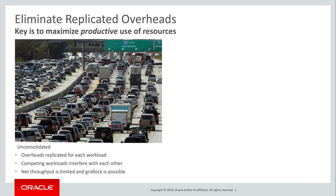Second, the multi-tenant consolidation model eliminates replication of overheads. Again, the transportation analogy works well here. Replication of overheads is inefficient for two reasons. First, by definition, it represents redundant use of resources. And second, these overheads compete with each other — net throughput is limited and gridlock is possible.